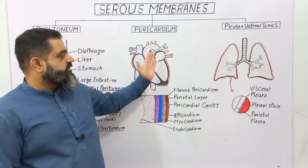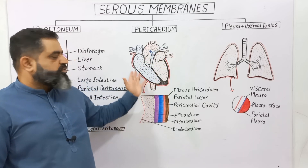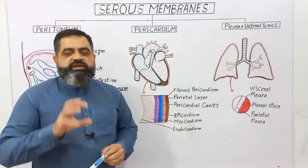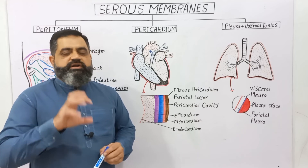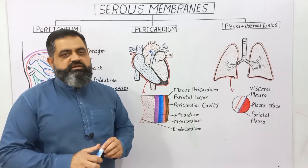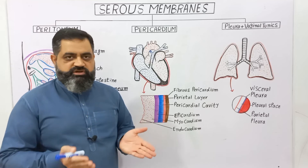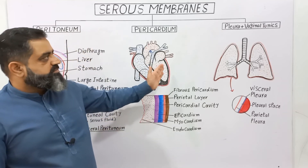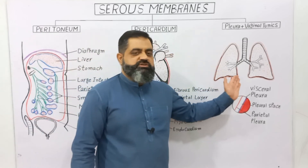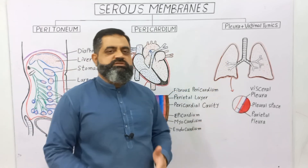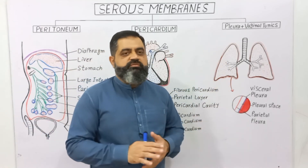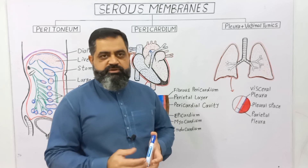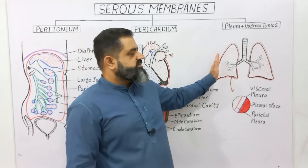The pericardial fluid also provides the space in which the heart can contract and relax, and does not allow too much expansion of the heart. The third type of serous membrane present in our body is known as pleura. Pleura has an external pleural membrane and an internal pleural membrane.